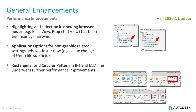In the Inventor 2020.1 update, the Inventor team continues with performance improvements. There is much faster highlighting when hovering over assembly component browser nodes in the drawing browser. Changes of non-graphic-related application option settings provide better performance — previously, modifying options like graphics window change, undo file size, or annotation scales while working in a large assembly was very slow but now behaves much faster. Rectangular and circular pattern performance have also been further enhanced.